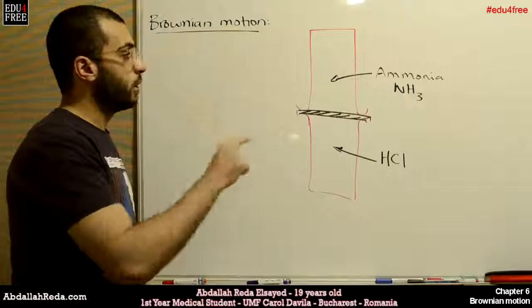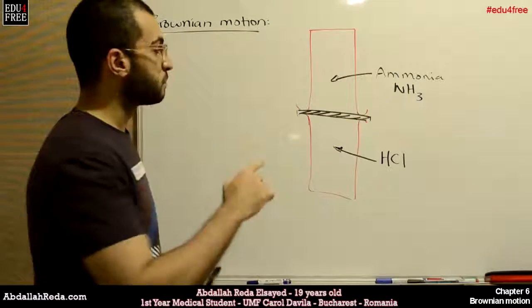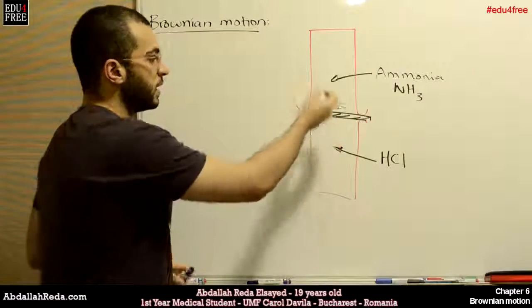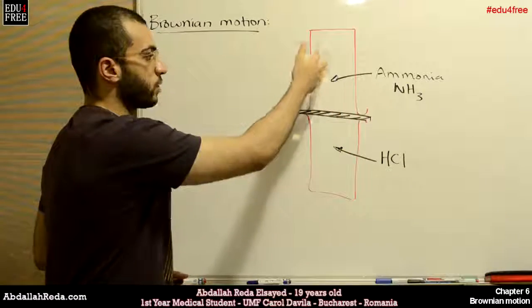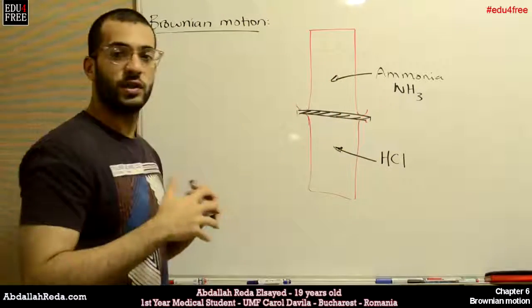But if there are no intermolecular spaces, disregarding the density, it will not be allowed for hydrogen chloride to go upwards or ammonia to go downwards because there is no space.